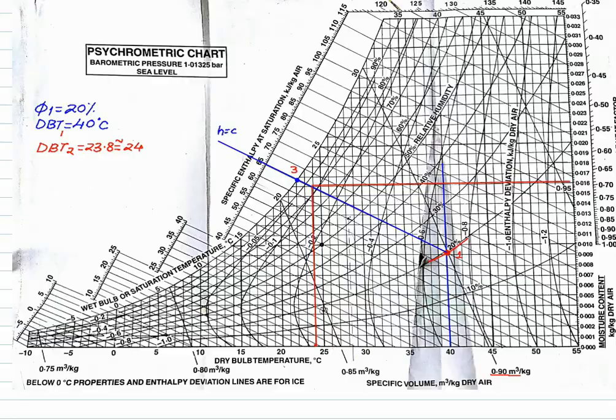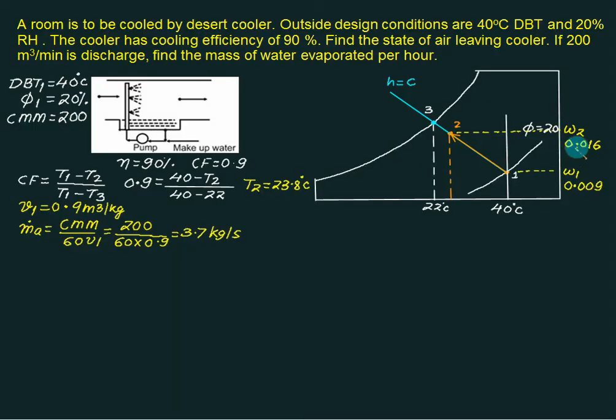So we have W2 equal to 0.016 from the graph. And now we will take the water balance across this figure. So mass of water entering from this side is mass of air multiplied by W1. Mass leaving from this system is point number 2, is M dot A multiplied by W2. And this one is mass of water entering, simply M dot W.